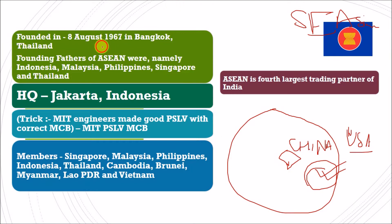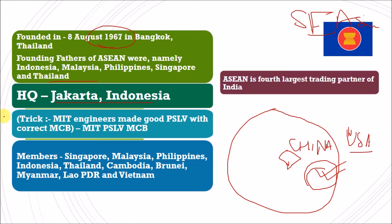ASEAN was founded in the year 1967 in Bangkok, Thailand. The headquarter is in Jakarta, Indonesia. Initially there were only five countries: Indonesia, Malaysia, Philippines, Singapore and Thailand, and gradually the membership increased. Today we will discuss a trick to remember all these countries.